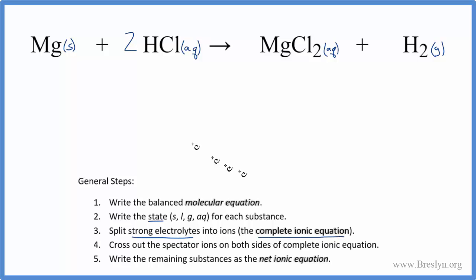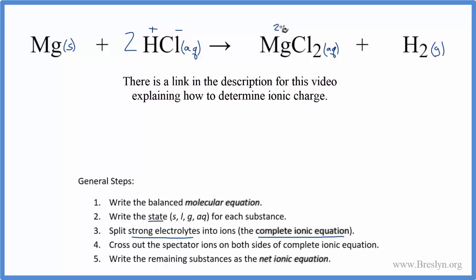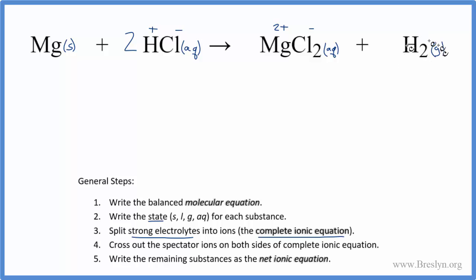Now we split the strong electrolytes into ions to get the complete ionic equation. We can't split Mg — it's a solid. HCl is a strong acid and strong electrolyte. From the periodic table, hydrogen is in group 1 with a 1+ charge, chlorine has a 1− charge. Magnesium is in group 2 with a 2+ charge, and chlorine is 1−. Hydrogen gas we don't break apart.